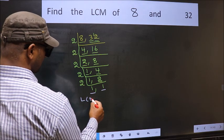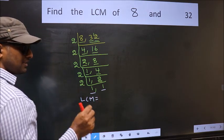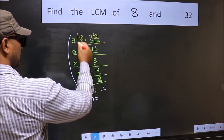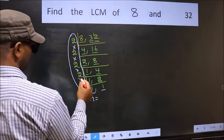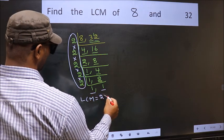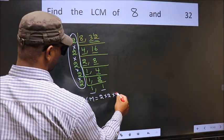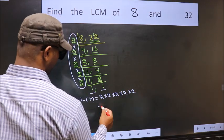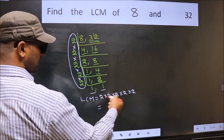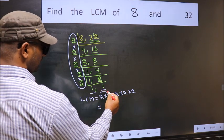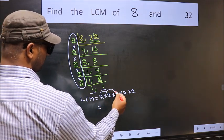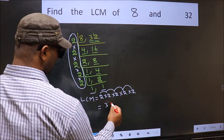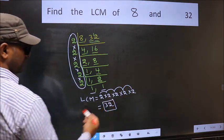So our LCM is the product of these numbers. That is 2 into 2 into 2 into 2 into 2. So let us multiply: 2 into 2 is 4, into 2 is 8, into 2 is 16, into 2 is 32. So 32 is our LCM.